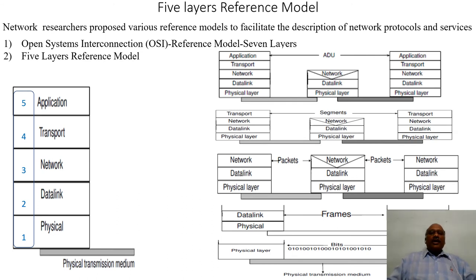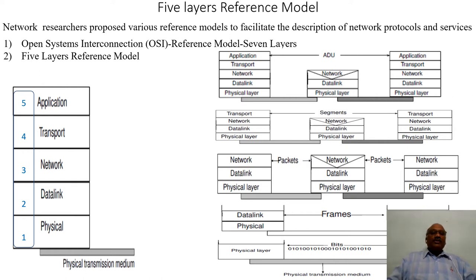Looking at the operations of services and protocols, network researchers have proposed various reference models to facilitate network protocols and services. The researchers have logically proposed a model called Open Systems Interconnection (OSI), a standard model consisting of seven layers. These layers correspond to various methods carried out before transmitting data to the other end, transforming data into an appropriate form so that proper transmission takes place.